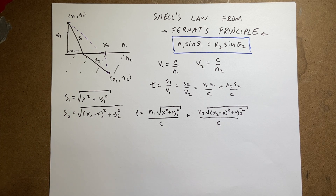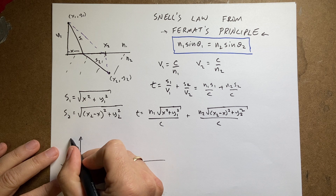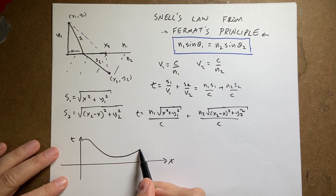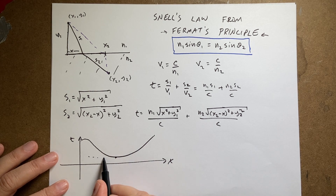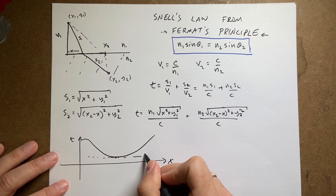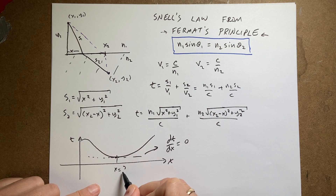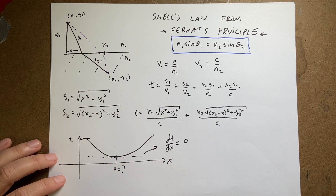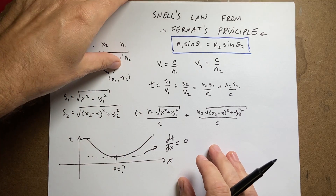The idea of the max/min problem is that t as a function of x has a minimum at some x value, and at that minimum the slope is zero. So I want to find the x where dt/dx = 0. It's possible it could be a maximum, so you'd have to verify, but I'm going to proceed and see what happens. I want to take the derivative of this function with respect to x and set it equal to zero.